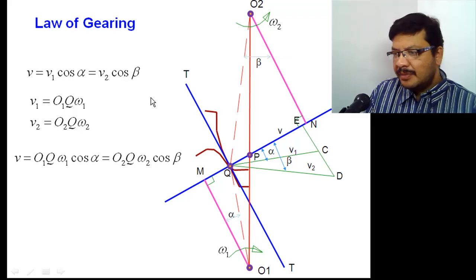Now, angular velocities are known to you. The relation between angular velocity and linear velocity is V equal to R omega. Here, R is nothing but O1 into Q. Hence, V1 equal to O1Q omega 1. Similarly, V2 equal to O2Q into omega 2.